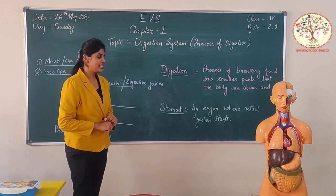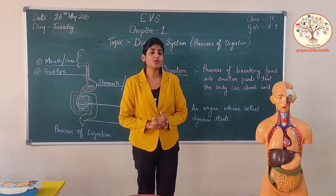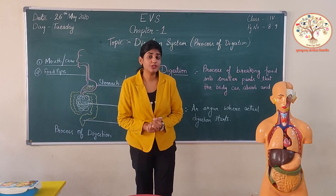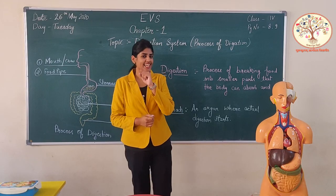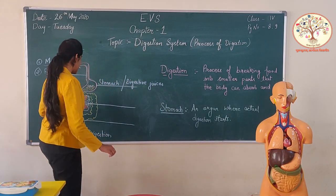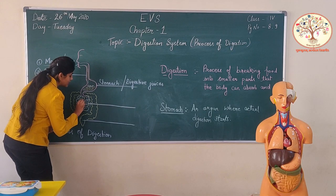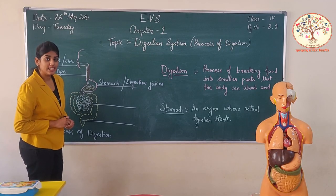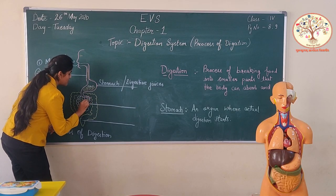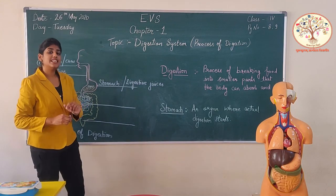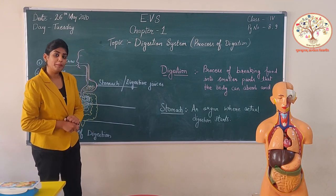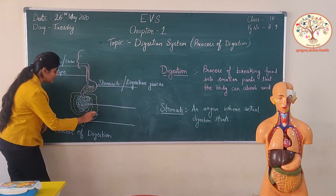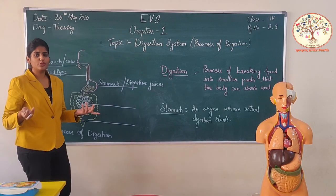Have you ever heard that our food contains different types of nutrients? But where do these nutrients get absorbed? That is in the small intestine. The nutrients of the food are absorbed by the blood present near the small intestine wall. So in the small intestine, the nutrients are absorbed by the blood.